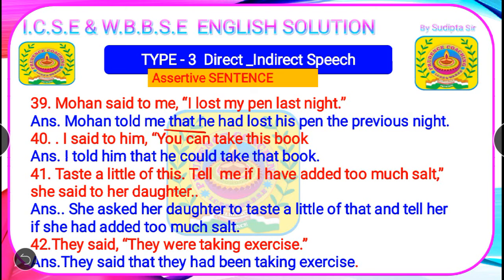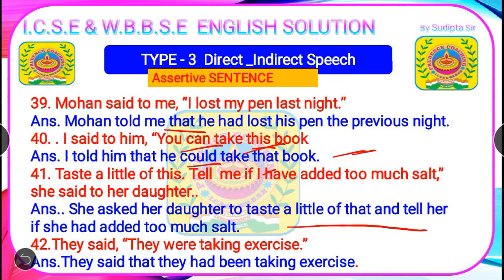Question 40: 'I said to him, you can take this book.' Final answer: 'I told him that he could take that book.' ('Can' → 'could'; 'this' → 'that.') Question 41: 'Taste a little of this, tell me if I have added too much salt,' she said to her daughter. Answer: 'She asked her daughter to taste a little of that and tell her if she had added too much salt.' Question 42: 'They said, we were taking exercise.' Answer: 'They said that they had been taking exercise.'